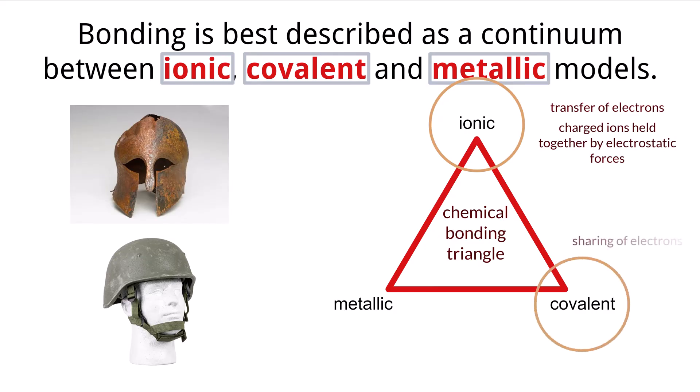In the covalent model, atoms share electrons to achieve a stable electron configuration, forming covalent bonds characterized by the overlapping of electron orbitals. This model is prevalent in organic and inorganic compounds. The metallic model, on the other hand, describes the bonding in metals, where a sea of delocalized electrons exists between a lattice of positively charged metal ions, creating a strong metallic bond.